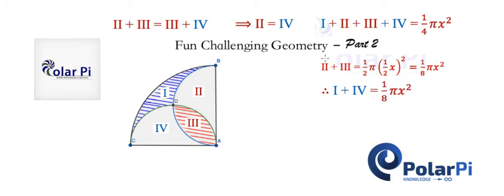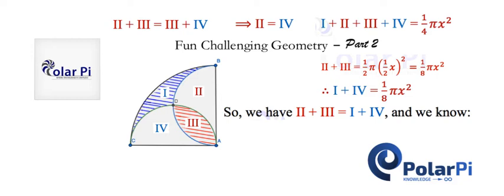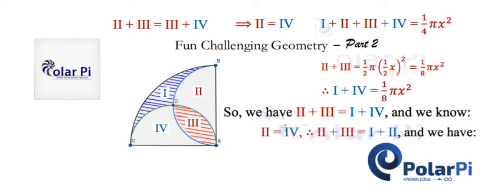But wait — we've said that the area of regions two and three together was one eighth pi x squared, and we just said that one eighth pi x squared is also equal to the area of regions one and four together. So that means the area of regions two and three together is equal to the area of regions one and four together. This is the moment where we call on the fact we stated earlier: the area of region two is equal to the area of region four. Because now we're going to substitute on the right side for region four with region two. That means region two plus region three is equal to region one plus region two.